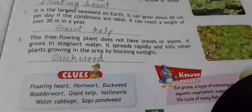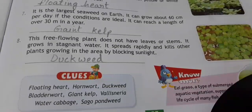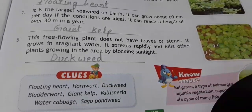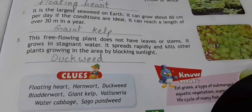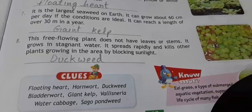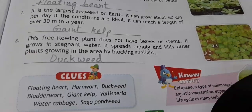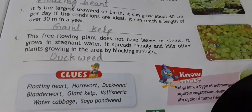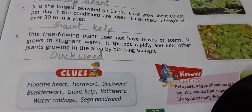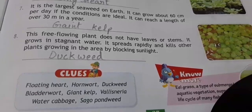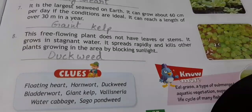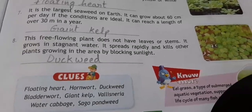This free-floating plant does not have a leaf or stem. It grows in stagnant water, spreads rapidly, and kills other plants growing in the area by blocking sunlight. We call it duckweed. Those were the aquatic plants from the world around us.